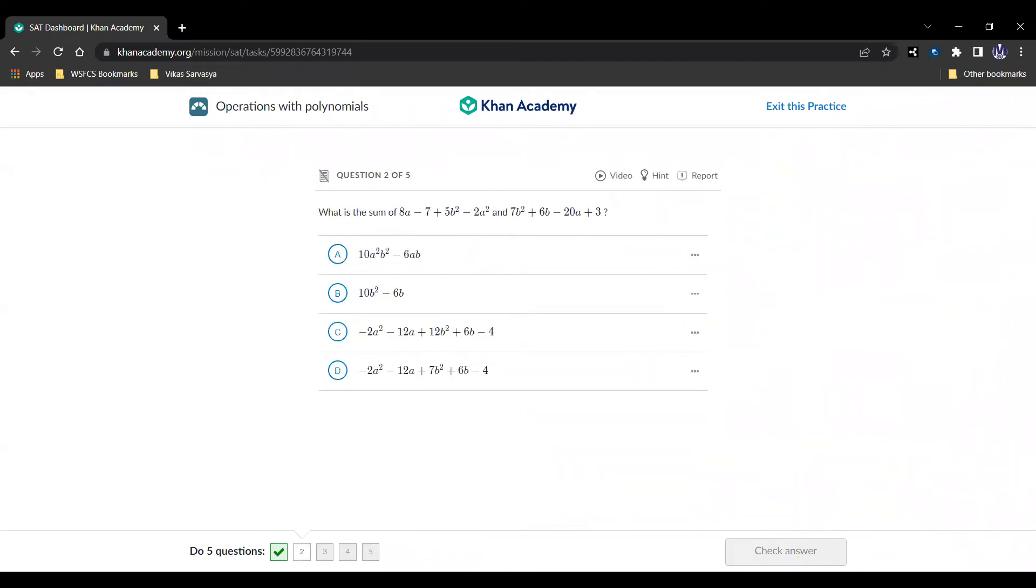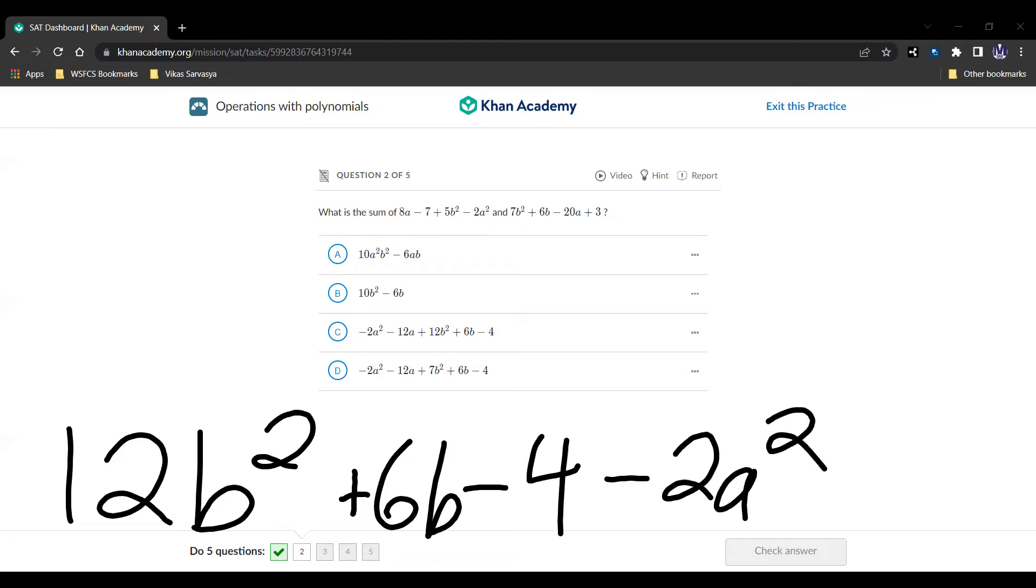Go to the next question and here it is. What is the sum of 8a minus 7 plus 5b squared minus 2a squared and 7b squared plus 6b minus 20a plus 3. Well, that is a mess but it's an easy one to deal with. We'd group the b squared, 12b squared, and 6b by itself. Then we'd group the a squared, negative 2a squared by itself, and we'd group the a, so 8a minus 20a is negative 12a, and that's answer choice C. That's our answer. Let's keep going.